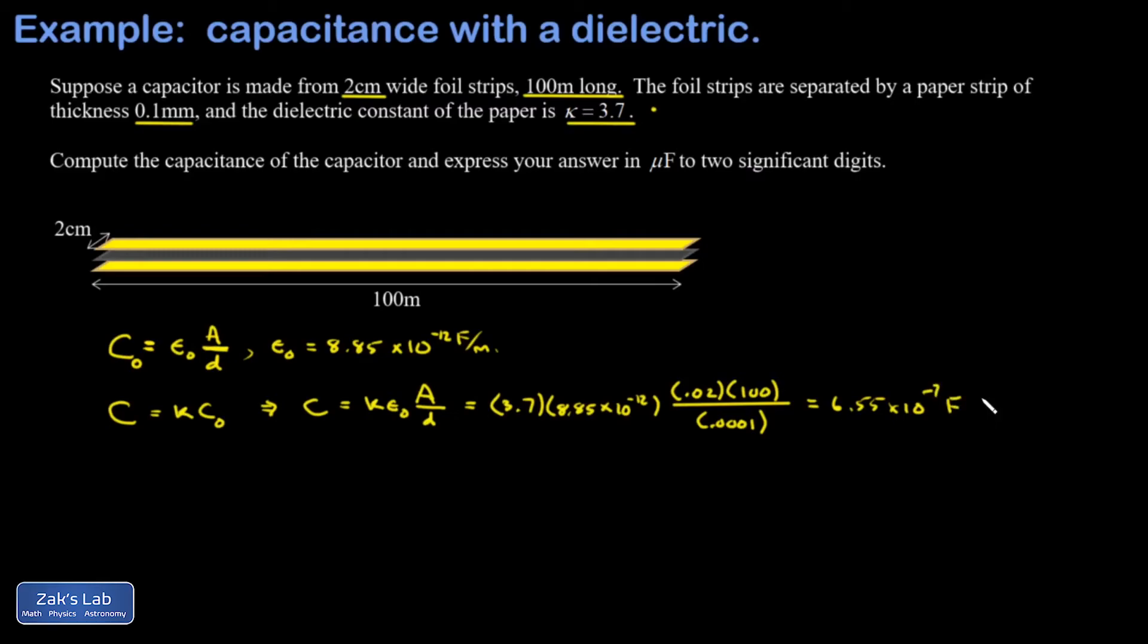Now, I wanted to express in microfarads, so I'm going to have to manipulate the scientific notation a little bit. Micro is 10 to the negative 6, so I need to increase this piece. I'm going to multiply it by 10. That means I have to decrease the other piece, divide by 10. And I get 0.655 microfarads for this capacitor.